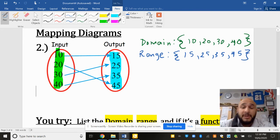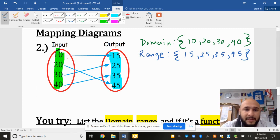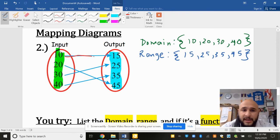Now, is this a function? Well, if I were to list all the points that were created by this mapping diagram, first, they created 10 to 15. So my first point is (10, 15). My second point looks like it's (20, 45).